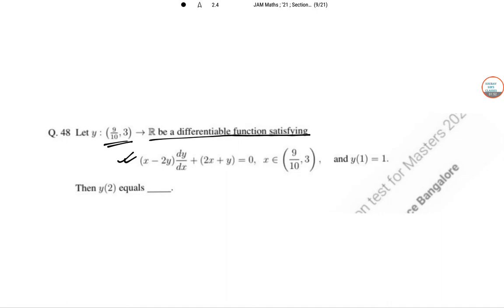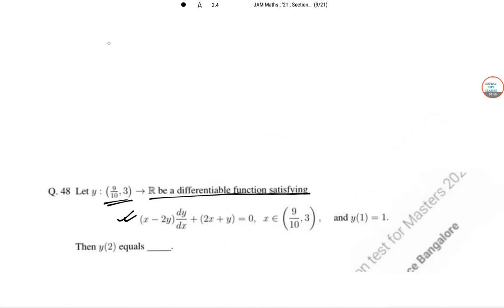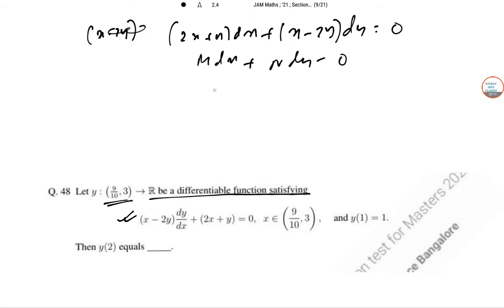So in this case, (x - 2y)dy/dx... So (2x + y)dx + (x - 2y)dy = 0. This is an exact differential equation, so M dx + N dy = 0. So ∂M/∂y = 1 = ∂N/∂x. So integration of M dx plus integration of N dy equals c, y constant and without x.